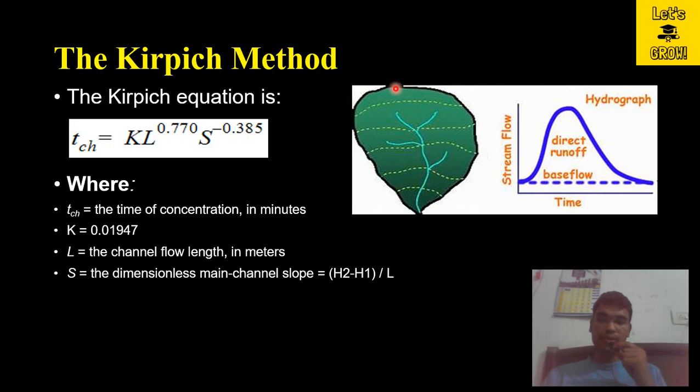The farthest point elevation is H2, and elevation at the outlet is H1. So H2 minus H1 divided by the length between these two extreme points is L. By using this formula, you can calculate the slope. By putting all these values of K, L, and S, you can find out the time of concentration using the Kirpich method.